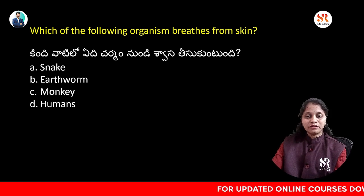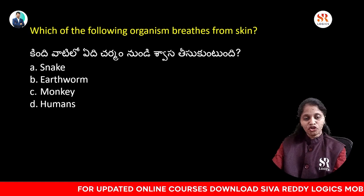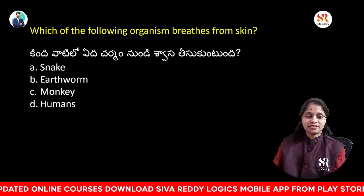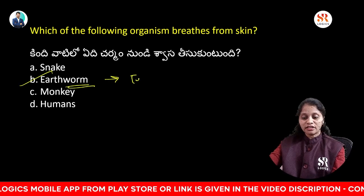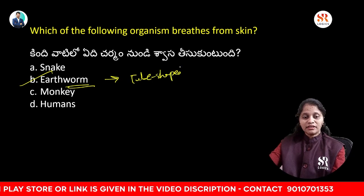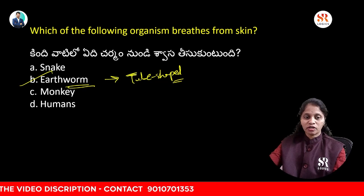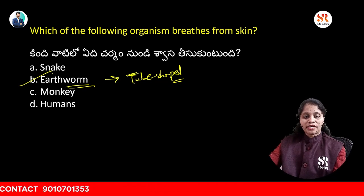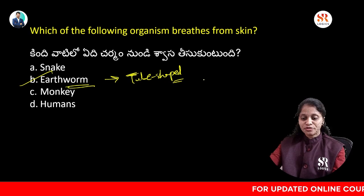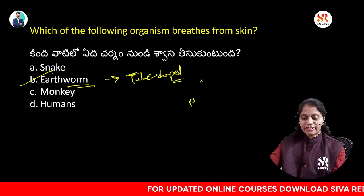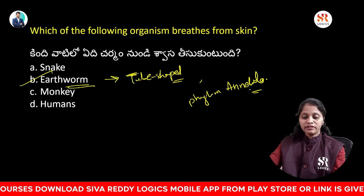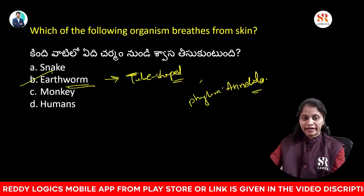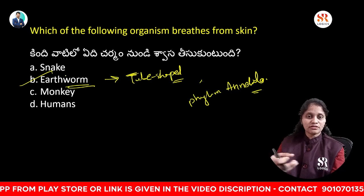Which organism breathes through the skin? Options: snake, earthworm, monkey, humans. Earthworms breathe through their skin. They are tube-shaped organisms commonly observed in the rainy season, living in soil and feeding on living and dead organic matter. They belong to phylum Annelida and are natural fertilizers.